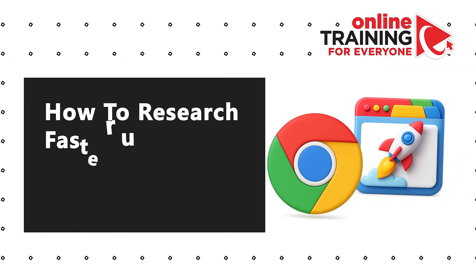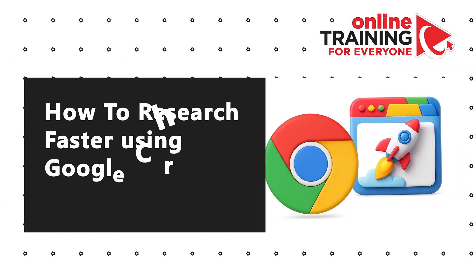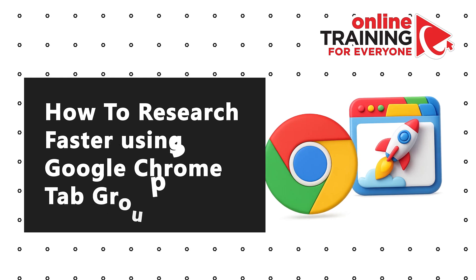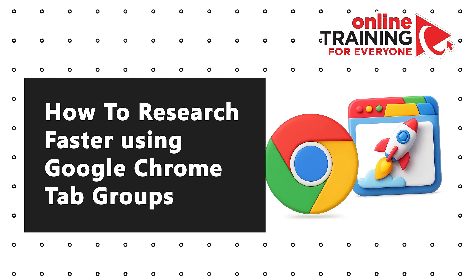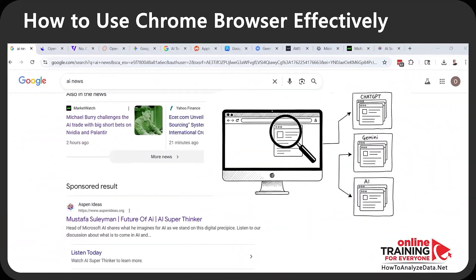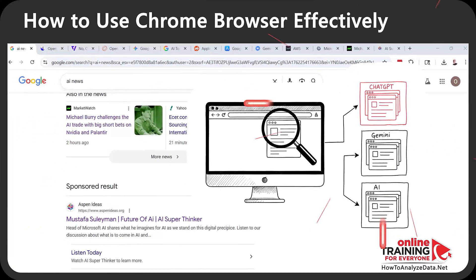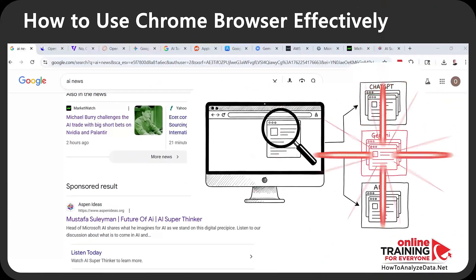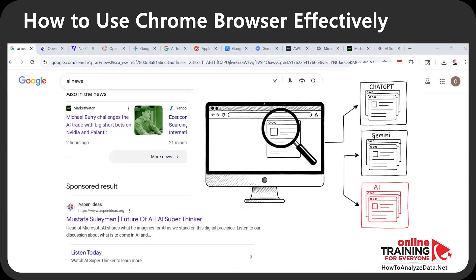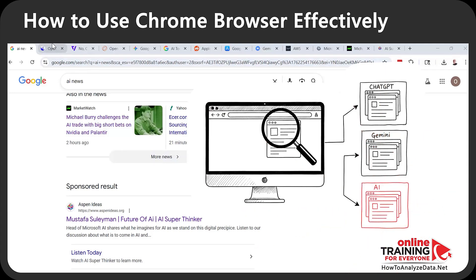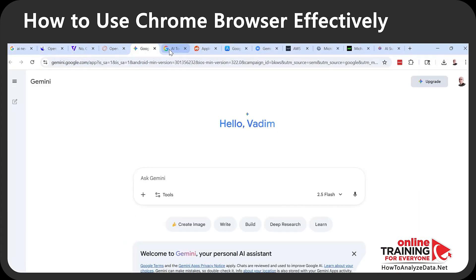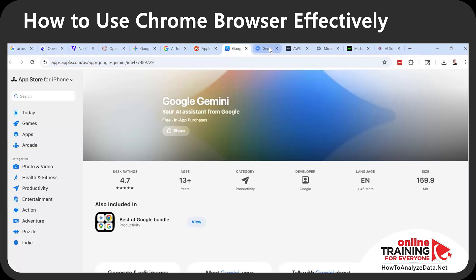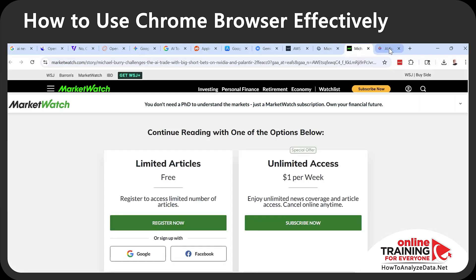Let me share with you how to research faster using Google Chrome tab groups. I'm researching three topics: ChatGPT, Google Gemini, and AI artificial intelligence. And as part of my research, I have a lot of tabs opened.